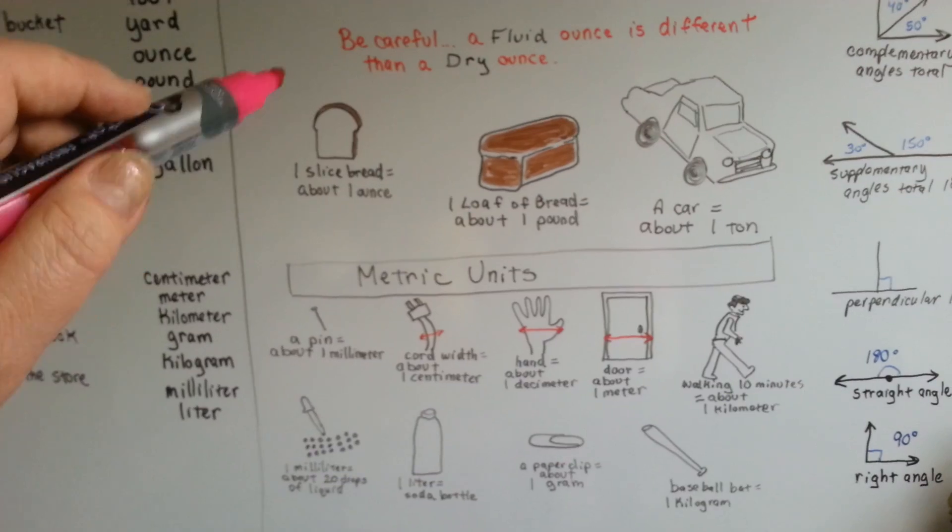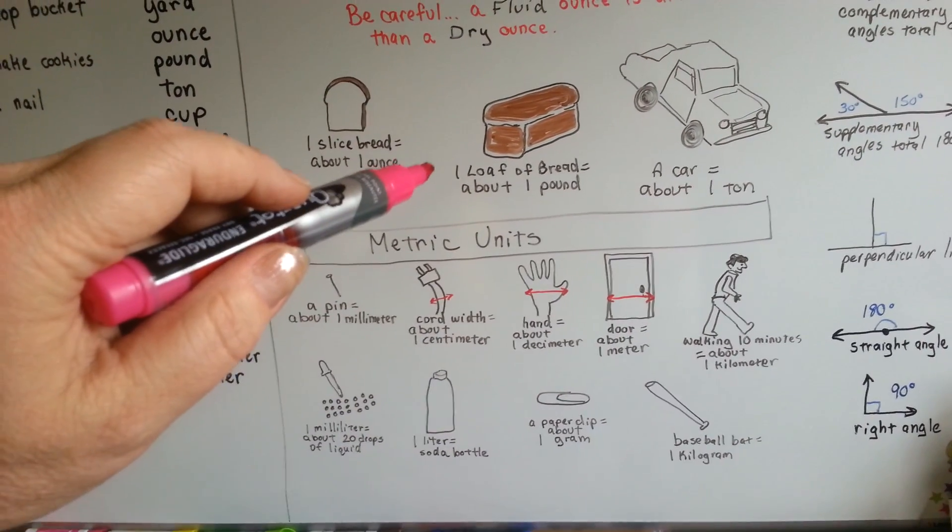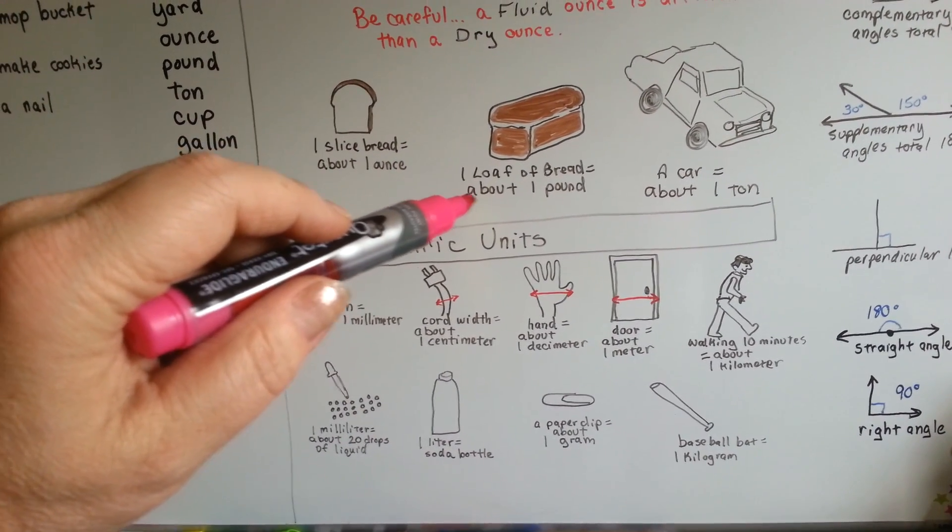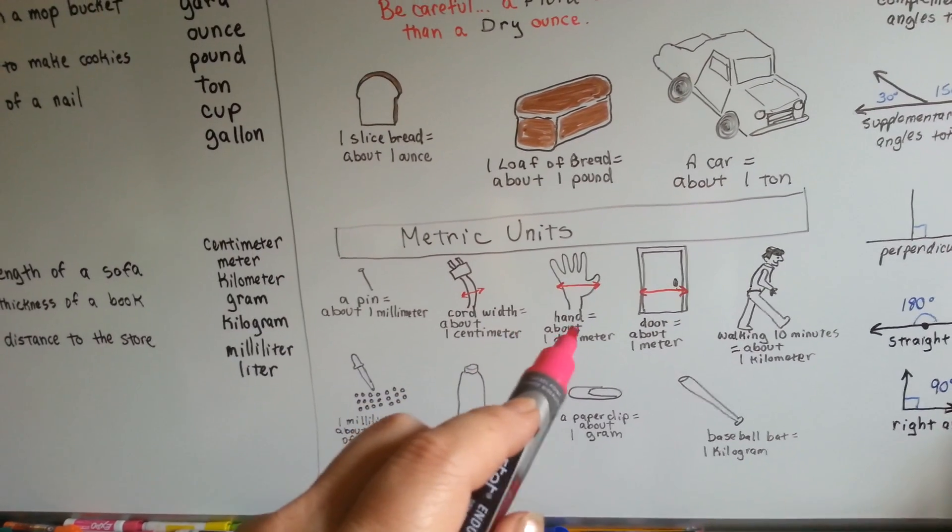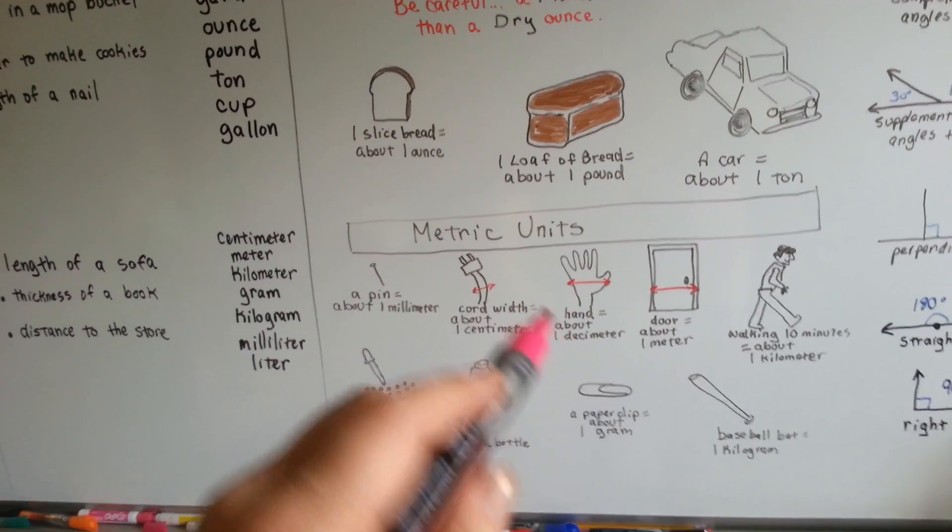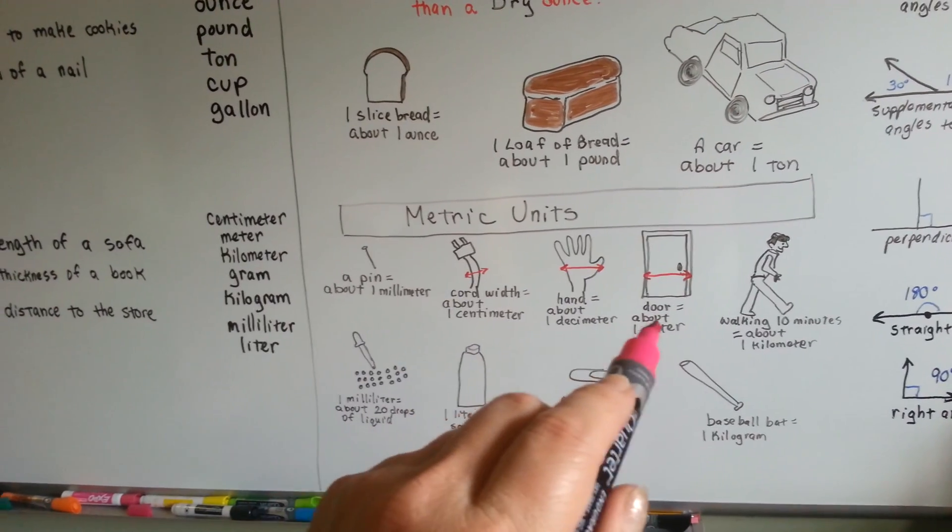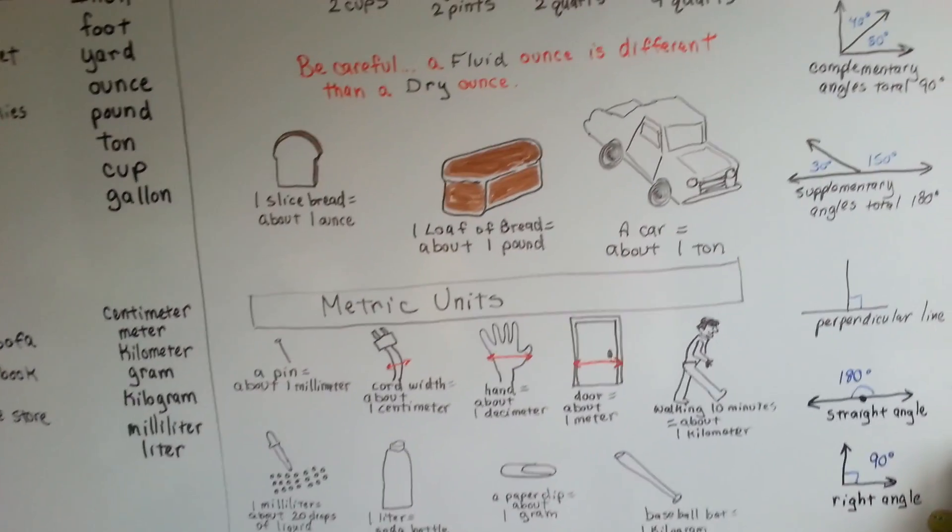So you can see that there were benchmarks in here that a loaf of bread is about a pound, so that you know how much a pound is. The width of your hand is about a decimeter, so you can say, oh, okay, the width of my hand, I understand. Or that a door is about a meter.